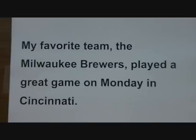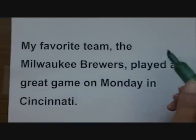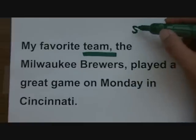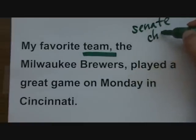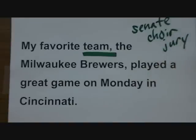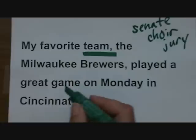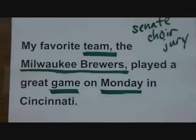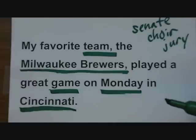One more example: My favorite team, the Milwaukee Brewers, played a great game on Monday in Cincinnati. Team is a noun — because that one word stands for a whole bunch of people, we call it a collective noun. Can you think of any others? How about Senate, choir, and jury? Milwaukee Brewers is the proper noun for my favorite baseball team, therefore it's a noun. Game is a thing — a noun. Monday is an idea — a noun. And Cincinnati is a place — a noun. So you see, it's possible to have all different types of nouns in a sentence. They're everywhere.